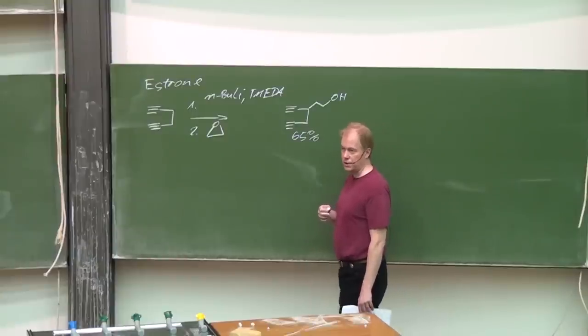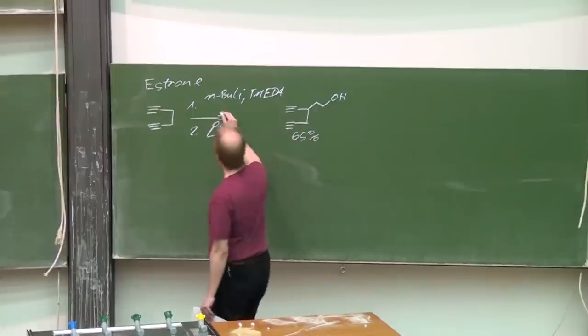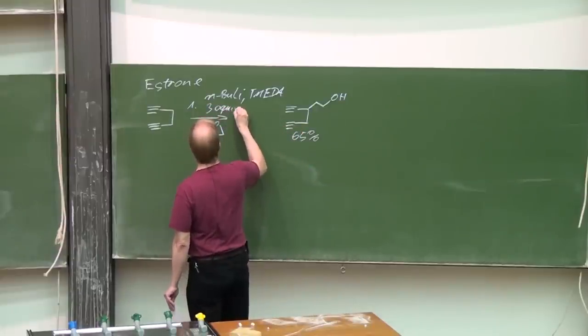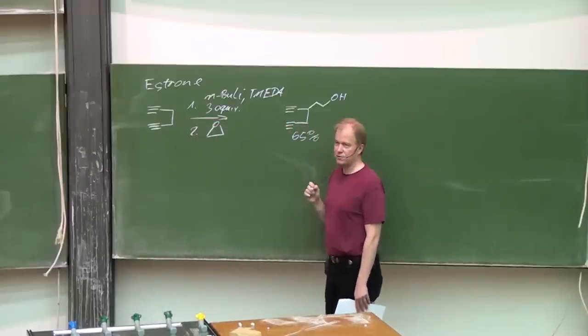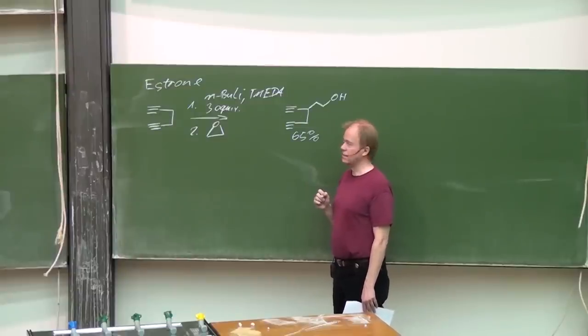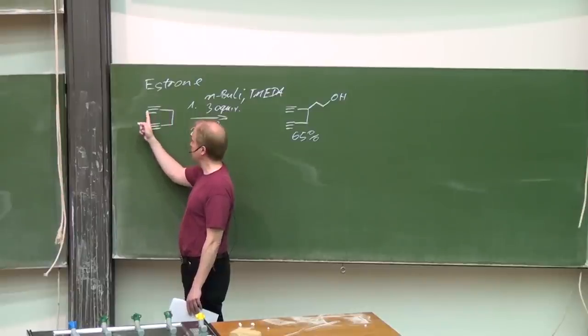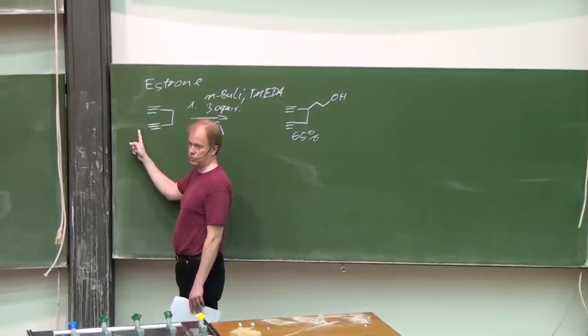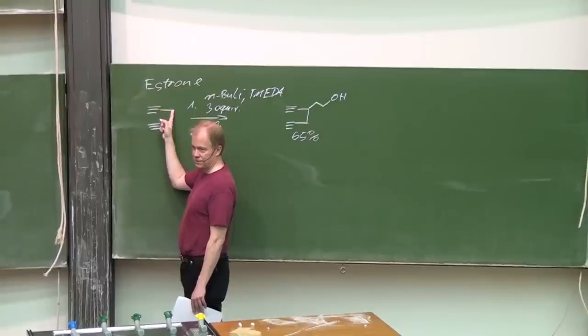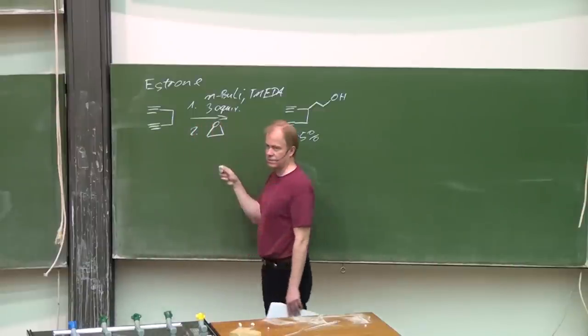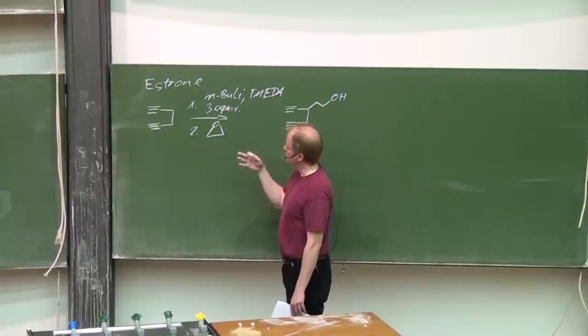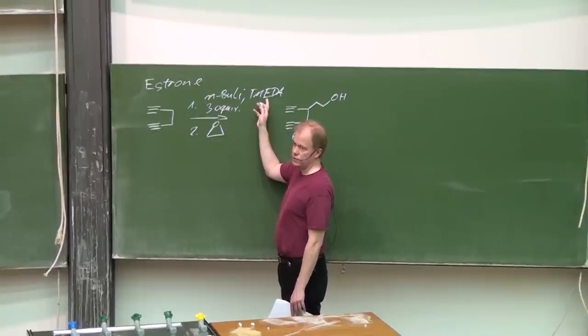And now you should be able to explain why did we use three equivalents of n-butyllithium. If you want to deprotonate in propargylic position, you have to deprotonate more acidic protons, acetylenic protons first. First equivalent, second equivalent, then third equivalent. So we are dealing with trianion, stabilized lithium compound, highly electron rich and stabilized with TMEDA, of course.